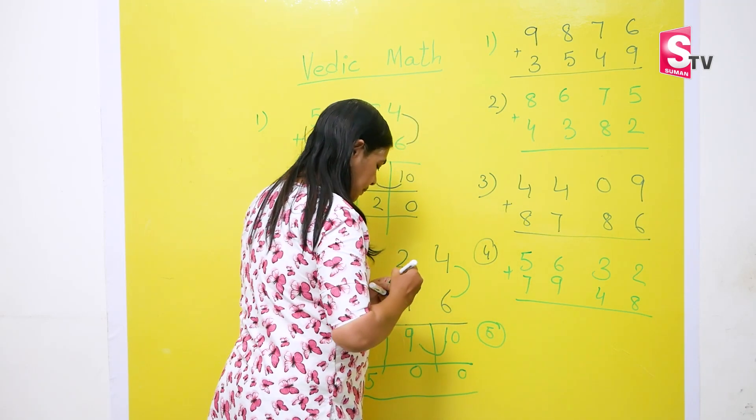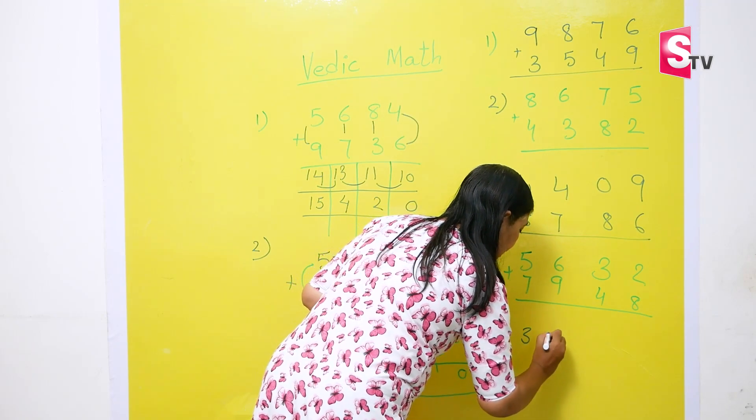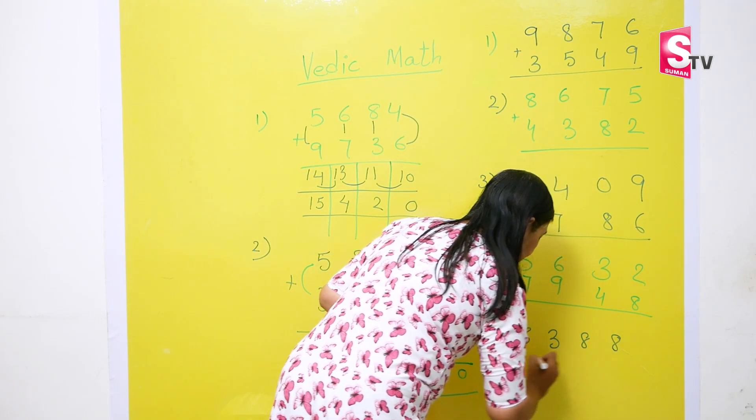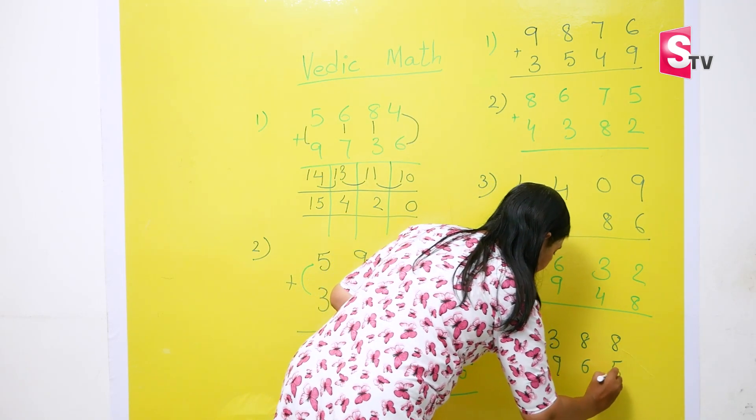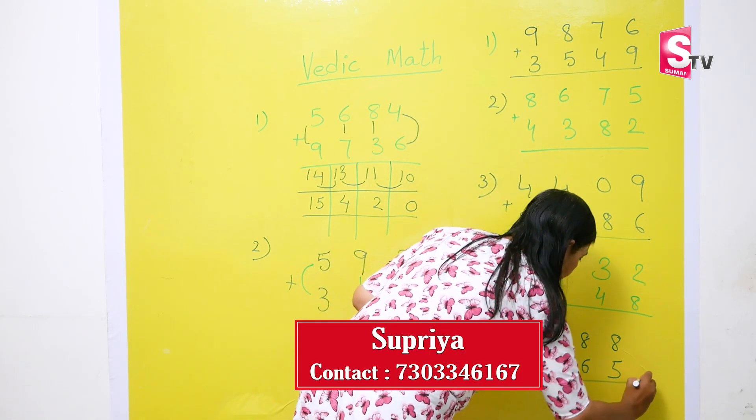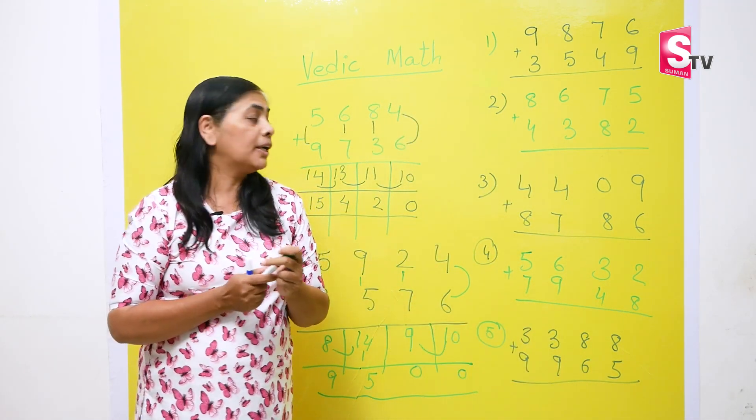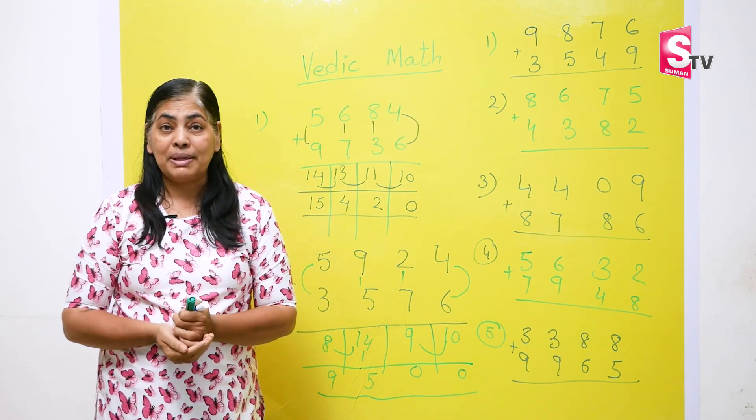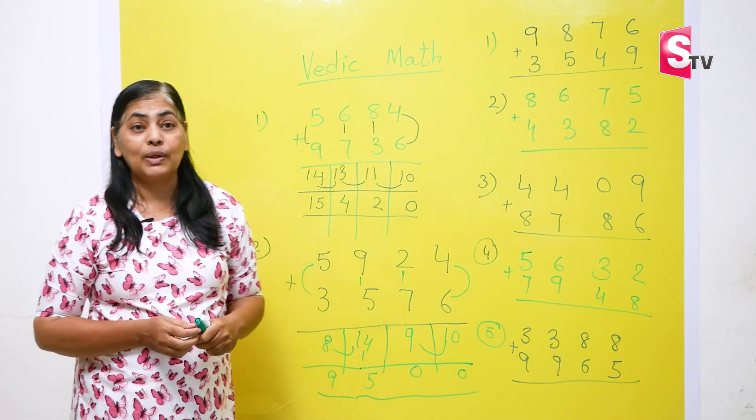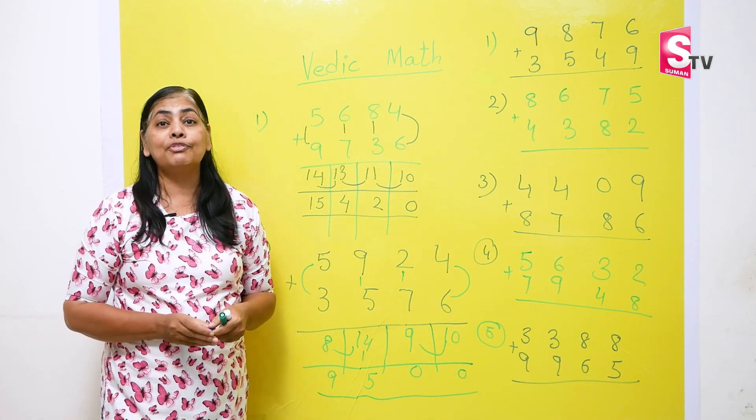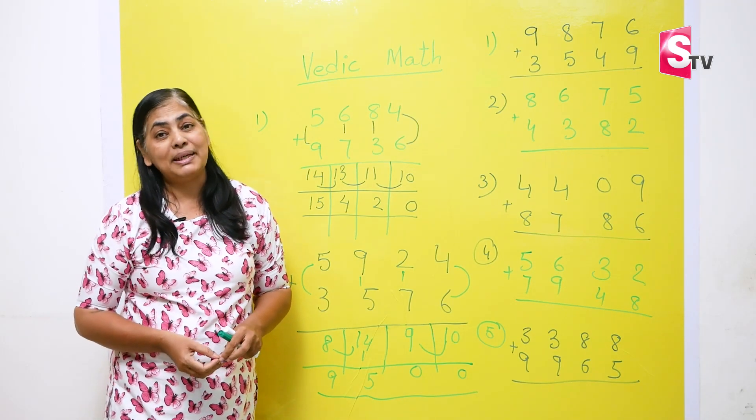And the last one, fifth one is 3388 plus 9965. So, students, you must add up and put your answers in comment box. Once you put your answers in comment box, don't forget to write your timing along with it. And do let me know if you want more practice sums or if you need any kind of help. Thank you so much. We will meet again.